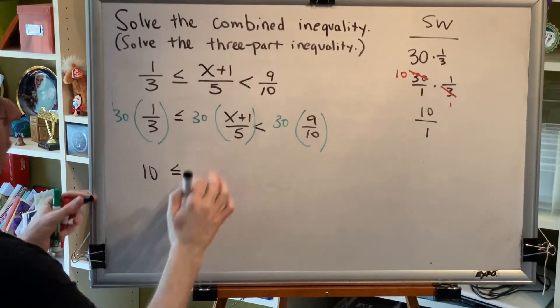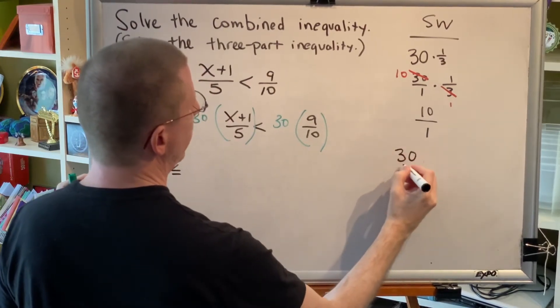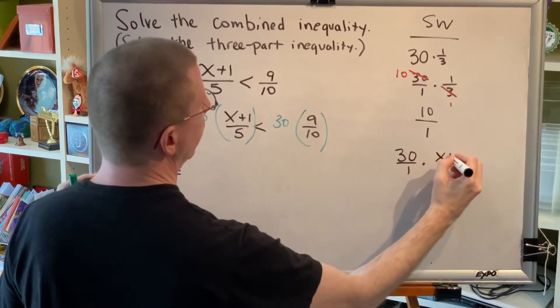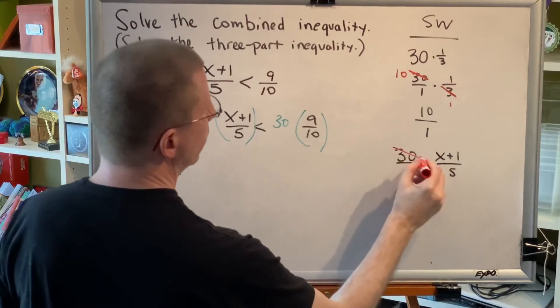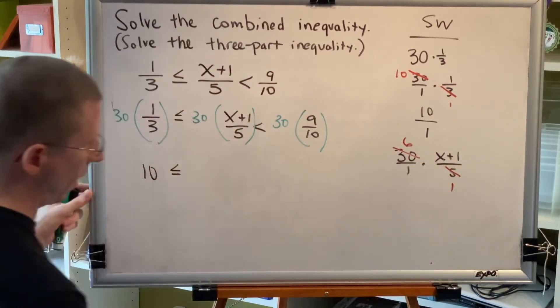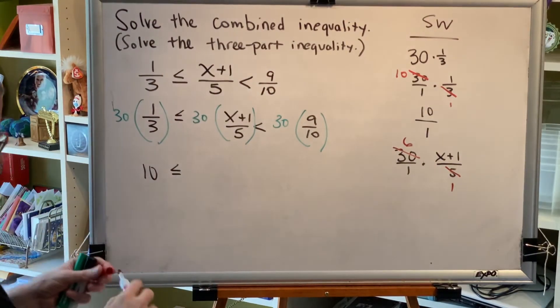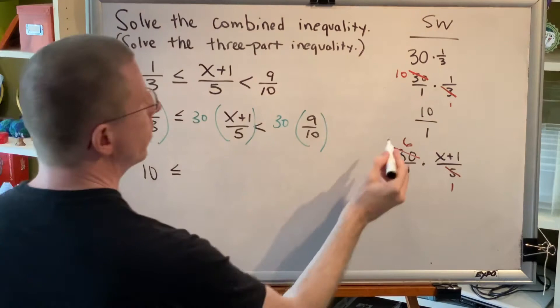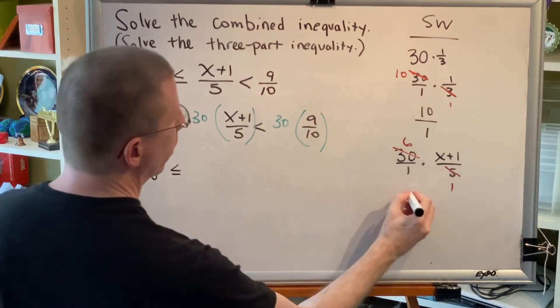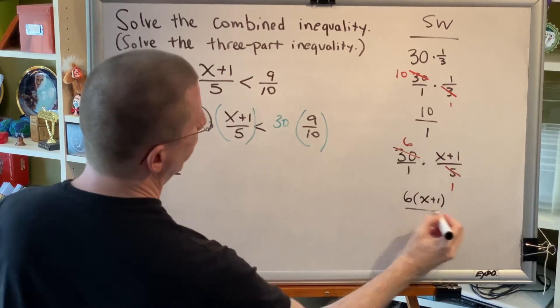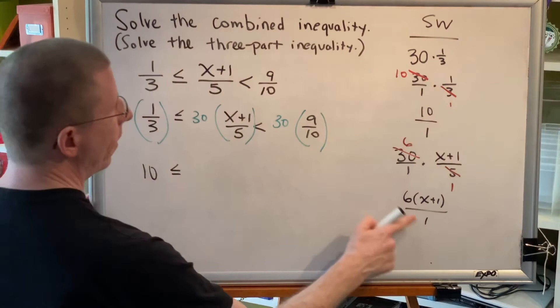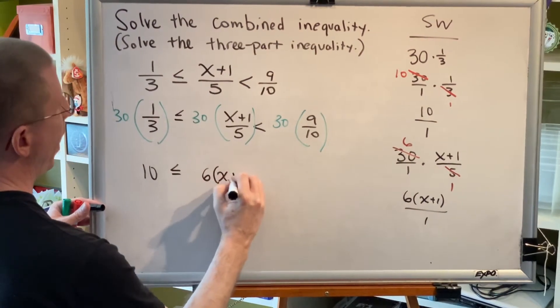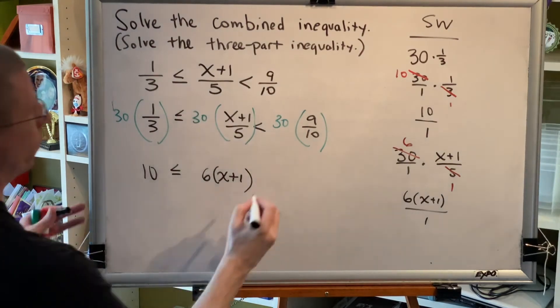Next, 30 times this fraction. Let's use the same approach. 30 is the same as 30 over 1. We have a 30 up top and a 5 down below. 30 divided by 5 is 6, which can be written as 6 over 1. So I have 6 times the x plus 1, all divided by 1. Notice that I have to put the x plus 1 in parentheses. If I don't, then only the x gets multiplied by the 6, which is not what I want. I want the whole numerator, the x plus 1, to be multiplied by the 6. Anything divided by 1 is itself, so in the middle I simply have 6 times the sum x plus 1 is less than.